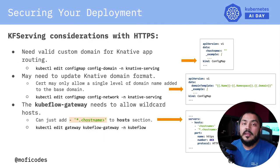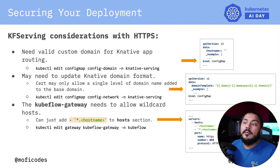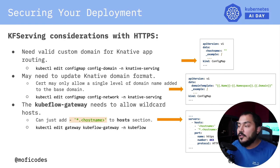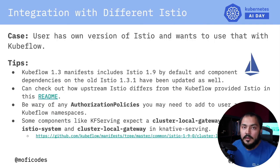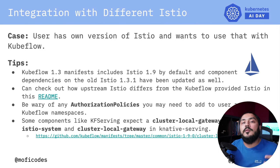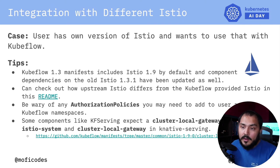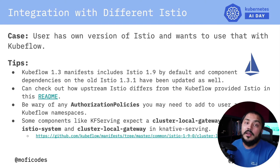When securing your Knative deployment for KF Serving, you may need to take a couple of extra steps. You will need a valid custom domain for Knative app routing, and you may need to update the Knative domain format. You may also need to add wildcard matching because Knative adds zones on top of your domain name for serving, so you might need to add wildcard matching on your hostname on your Kubeflow gateway. If you were using an older version of Kubeflow, you may have had to do workarounds to make Istio 1.6 work, but hopefully with newer versions this problem will be non-existent.